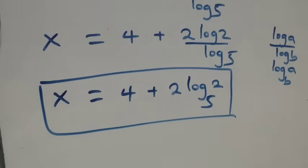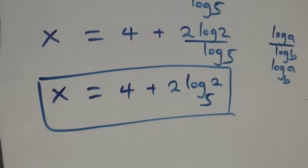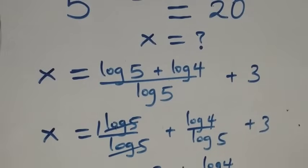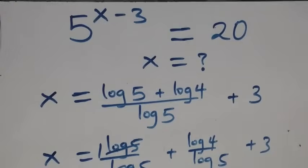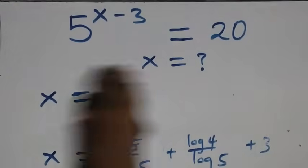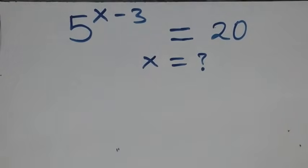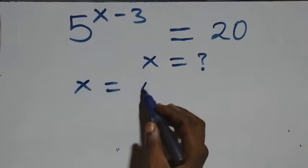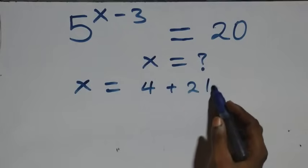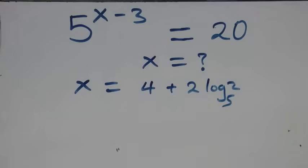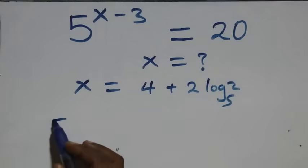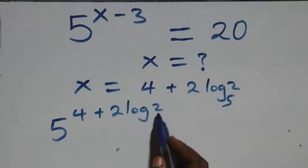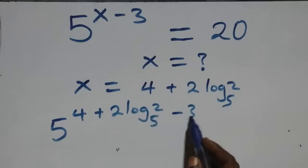Now let's check if x equals to four plus two log two base five satisfies the original equation. We substitute x equals to four plus two log two base five, so we have five raised to power four plus two log two base five, minus three, equals to twenty.